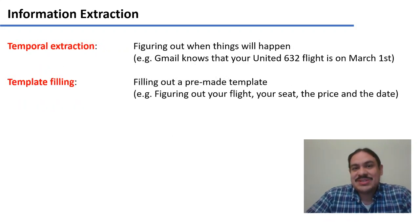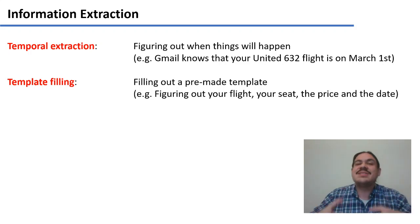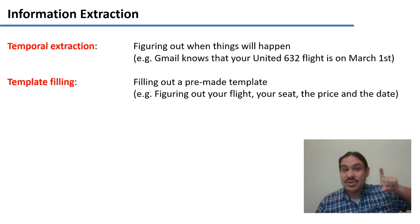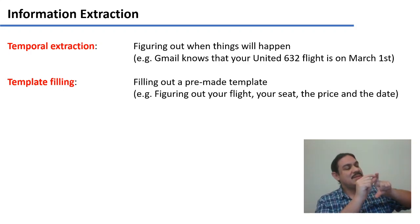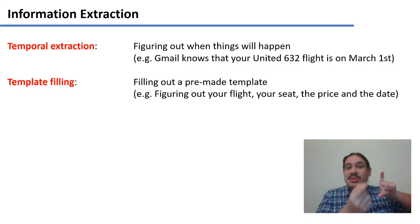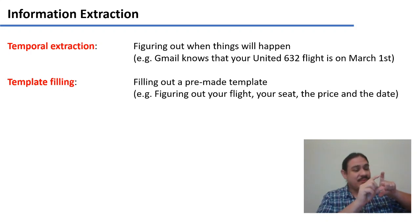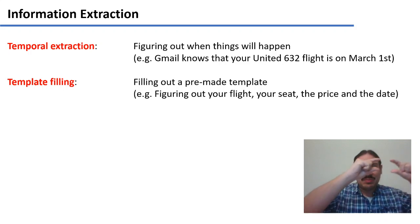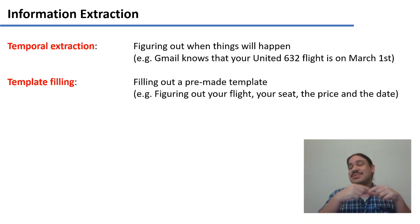There's temporal extraction, which is trying to figure out when something is happening. For example, if you have a reservation for a flight, Gmail is extracting times from your emails and it knows that you might have a flight on a certain date — that's how it gives you the reminder. There's also a technique called template filling, which is similar to having a small ontology that you've already made. For example, you know that there's information about flights and the attributes are the date of the flight, the price, the seat. This tries to extract all of this information from your emails to then create an entity — your flight reservation — and do something with it, like present it to you or trigger auto check-in.